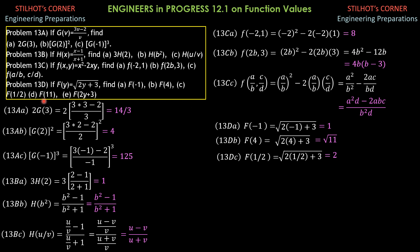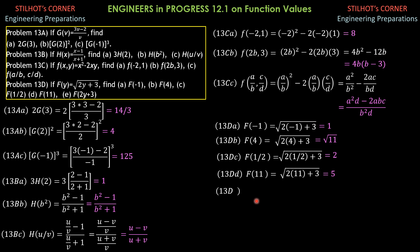For 13d part d, f(11): square root of (2 times 11 plus 3). 2 times 11 is 22 plus 3 is 25. Square root of 25 is 5. So f(11) is 5. Finally, for part e, f(2y + 3): that would be square root of (2 times (2y + 3) plus 3), which simplifies to square root of (4y plus 6 plus 3). The final answer is square root of (4y plus 9).